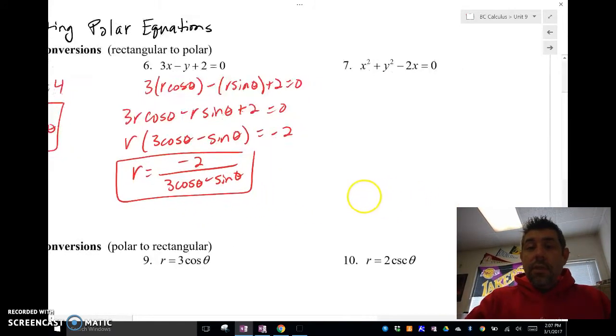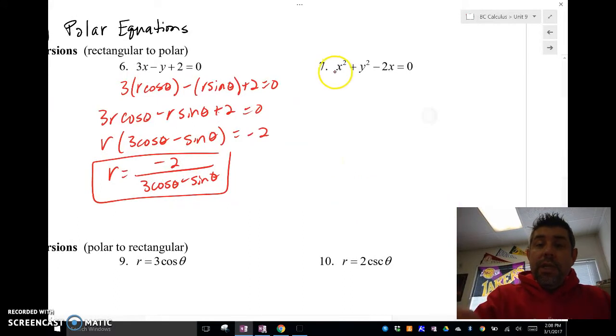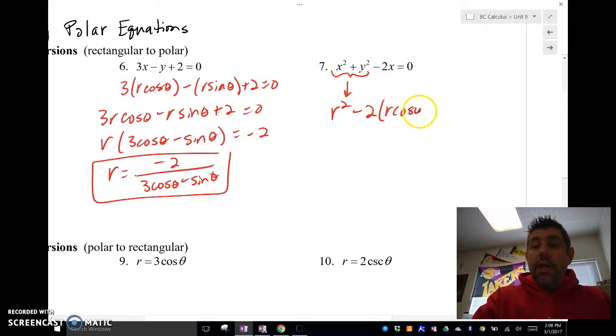Let's take a look at the last one here. If ever we see x² and x² + y², I automatically know x² + y² = r². So 2x is r cos(θ). I'm going to factor out an r, and I'm going to have r minus 2 cos(θ) equals 0.